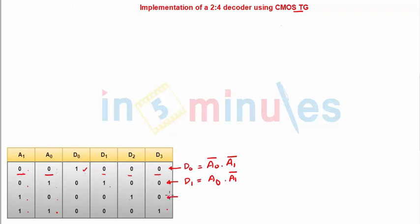Similarly we can do the same for d2, which is nothing but a0 bar ANDed with a1, and going ahead and computing for d3, d3 is a0 ANDed with a1.